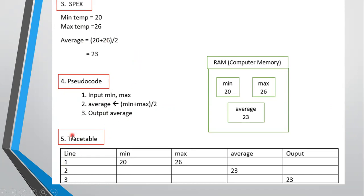Line one says input min and max. When tracing line one, we say min has value 20 and max has value 26, using our specific example. Line two means work out the average — the average is 23, calculated as min plus max divided by 2.